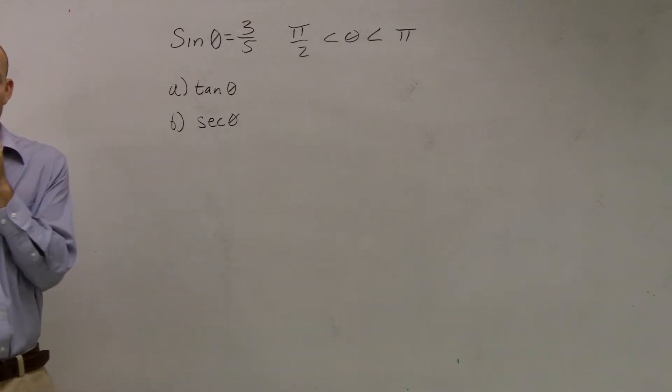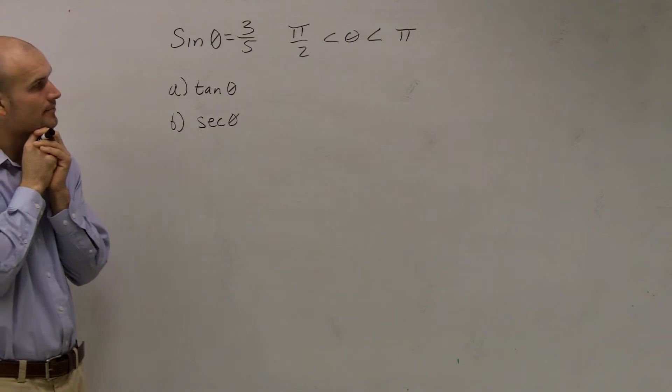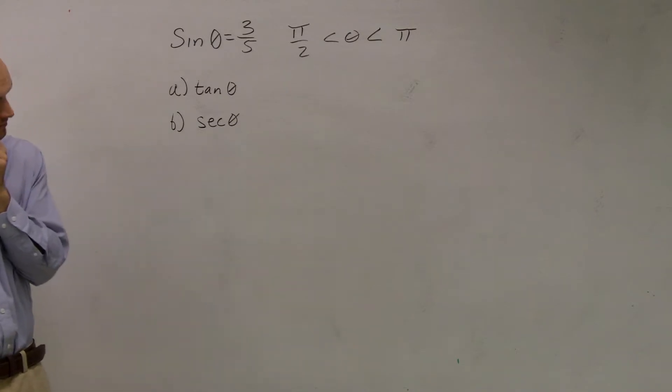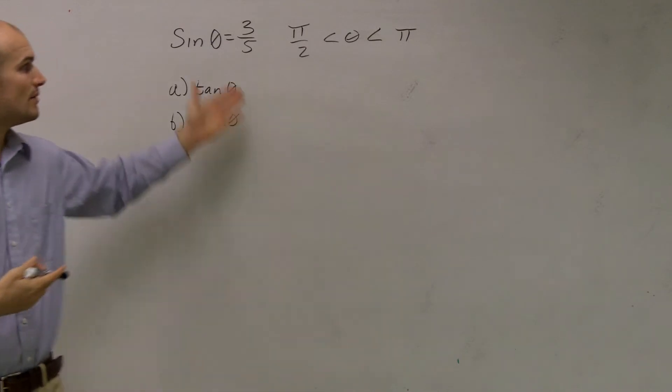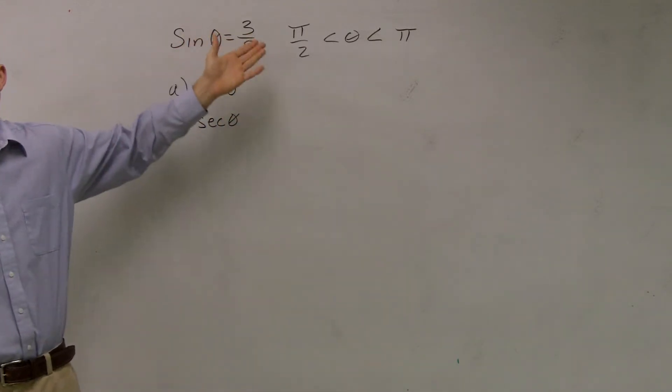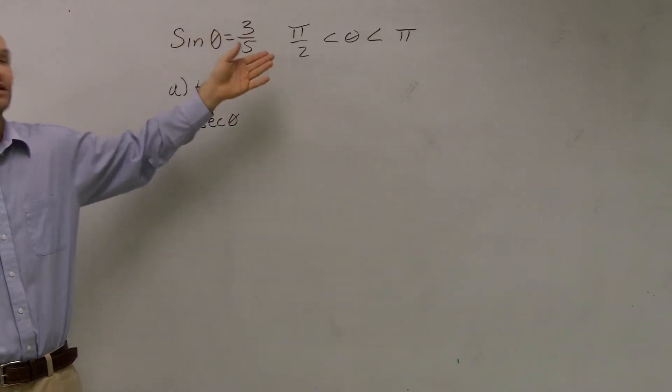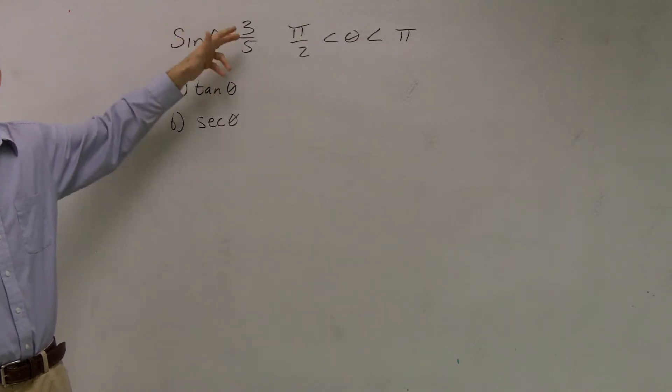Ladies and gentlemen, a couple things we need to know about this problem. When we're looking at this problem, we have sin θ = 3/5. Now, usually we could evaluate for that if we knew where it was on the unit circle. However, 3/5 is not going to be on the unit circle. But what I need to do is I need to understand what can my 3/5 represent?